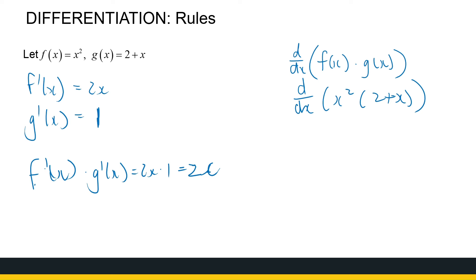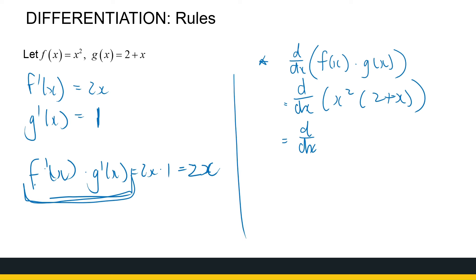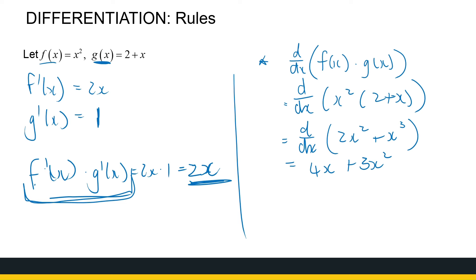I want to convince you that the product of the derivatives is not the same as the derivative of the product. If I multiply those two functions out, that's the derivative of 2x squared plus x cubed, which gives 4x plus 3x squared. So I can't just find the derivative of one function and multiply it by the derivative of the other. This counterexample shows it doesn't work, so we need another way.